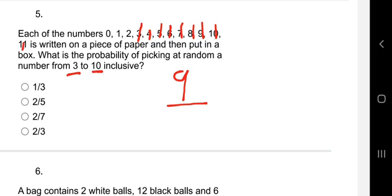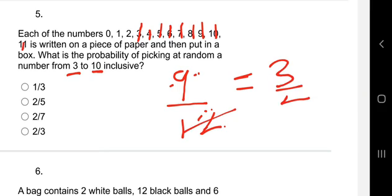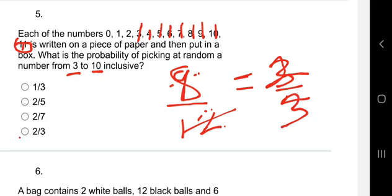So we have 8 out of 12. Let me correct that — 11 is not part of the range, so it's 8 over 12. We reduce to lowest terms: 4 goes into 8 giving 2, and 4 goes into 12 giving 3. That gives us two over three. The answer is 2/3.